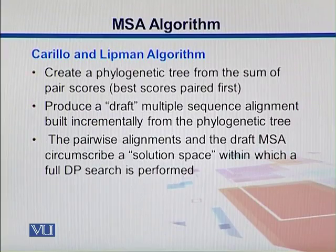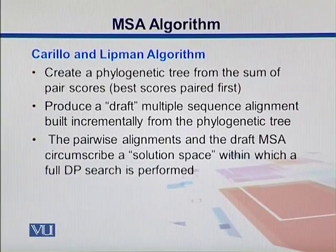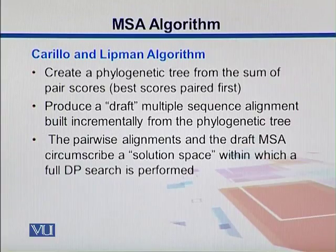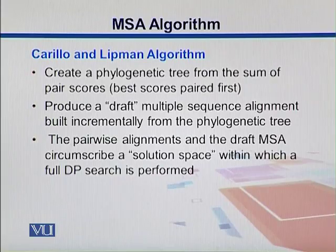In general, this algorithm can be summarized in the following steps. First, we create a phylogenetic tree from the sum of pairs scores. We perform this sum of pairing as shown in the previous example and then produce a phylogenetic tree. Then we produce a draft alignment built incrementally from the tree. The pairwise alignments and the draft MSA then circumscribe a solution space within which we can implement a dynamic programming search.